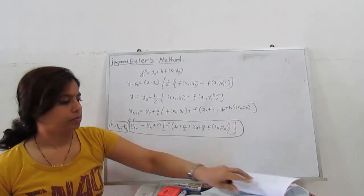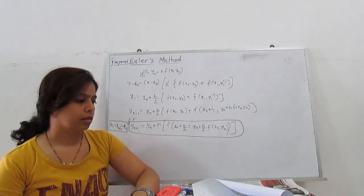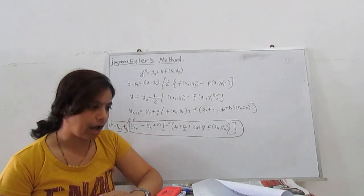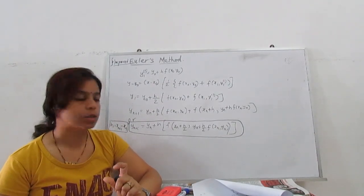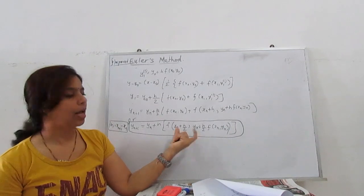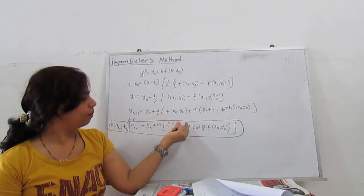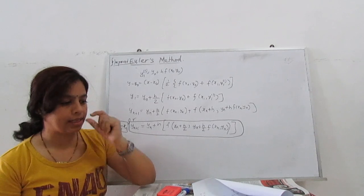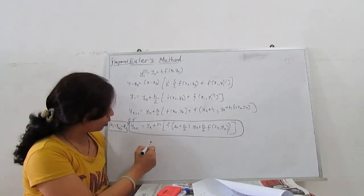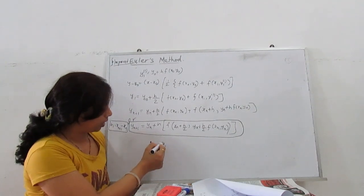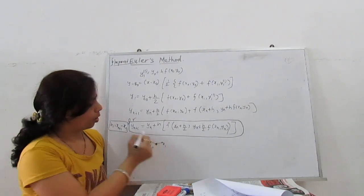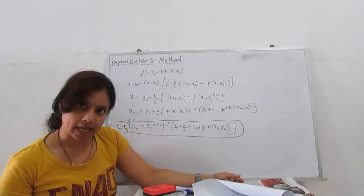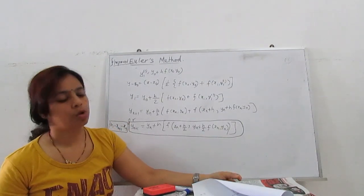In this modified method, the curve in interval [x0, x1] is approximated by a line through (x0, y0) with the average slope. The slope at x0 uses the midpoint: x0 + h/2 and y0 + (h/2)·f(x0, y0), which is the midpoint of x0 and x1. This is the general formula. Now I will show you with an example how to use this formula.